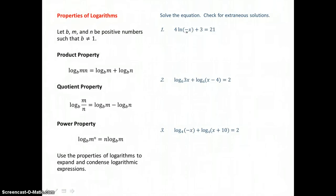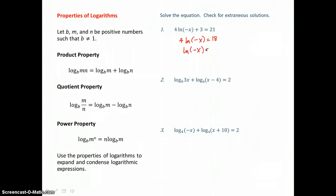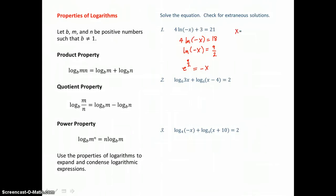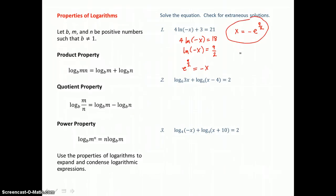Here we need to get our log alone before going from logarithmic form to exponential form. Subtracting 3 from both sides gives 18 on the right, then dividing both sides by 4 gives 18 fourths, simplified to 9 halves. Now with the log alone, the base is e, the exponent is 9 halves, and that equals negative x. Dividing both sides by negative 1, x equals negative e to the 9 halves power. When substituting that value, the double negatives in the log's number part produce a positive value, so it checks.